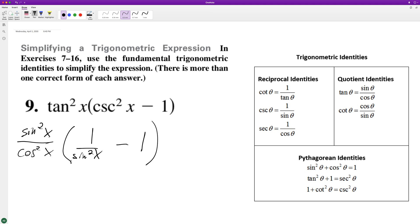When we distribute this across, the sine squareds cancel off. So we're left with 1 over cosine squared x minus tangent squared x.